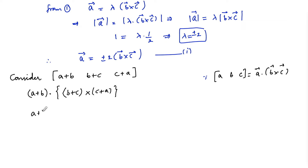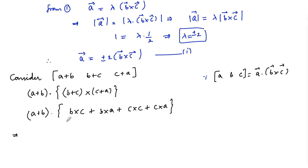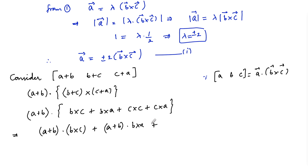Expanding (b+c)×(c+a): we get b×c + b×a + c×c + c×a. Since c×c = 0, this simplifies to b×c + b×a + c×a. Then dotting with (a+b) gives (a+b)·(b×c) + (a+b)·(b×a) + (a+b)·(c×a).